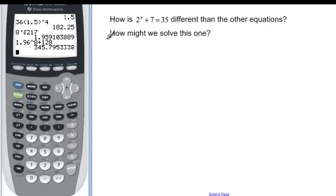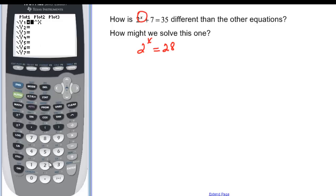Last problem, it says we have 2 to the x plus 7 equal 35. And we want to know how that's different from the ones that we just solved. Well, it's different because the x is in the exponent. It's not the base like it was in the previous problems. It's the exponent. So how might we solve this one? Well, I could try and subtract my 7. So I'd have my 2 to the x. And 35 minus 7 would be 28. But I can't say 2 to the something is 28. Okay. If you go and look in your calculator.